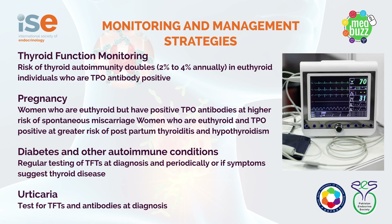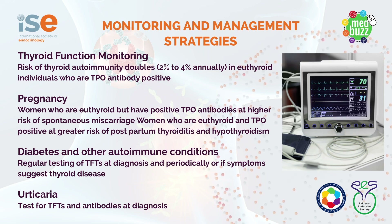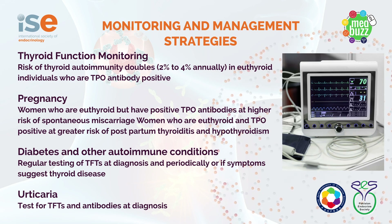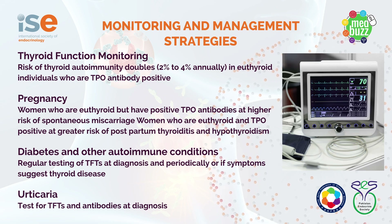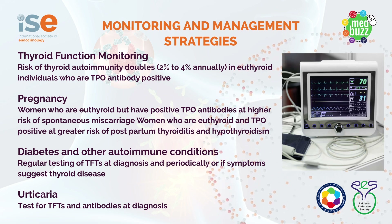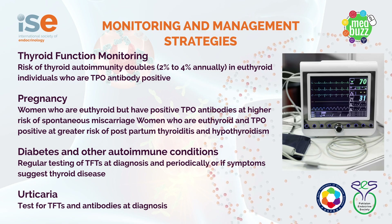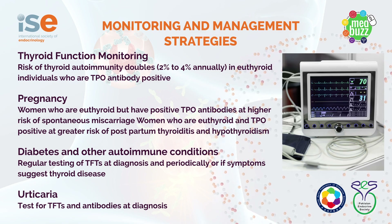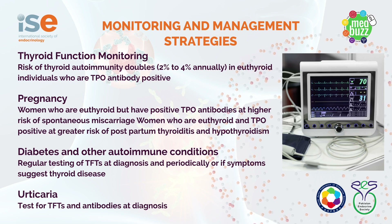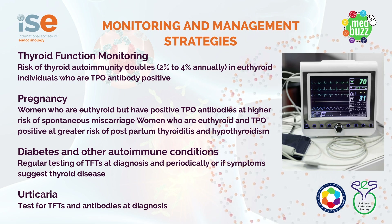In pregnancy, as we've highlighted, women who are euthyroid but have positive antibodies are at high risk of spontaneous miscarriage. But women with TPO antibodies who are euthyroid at the time of birth may also suffer a high rate of postpartum thyroiditis and hypothyroidism. So if that antibody status is known, additional thought can be given to those symptoms if they present early in the postpartum period.